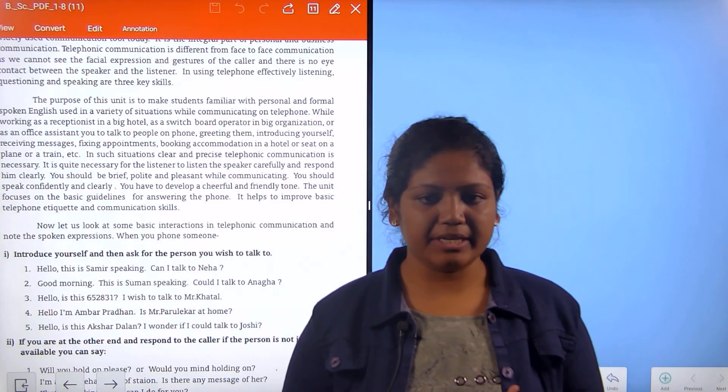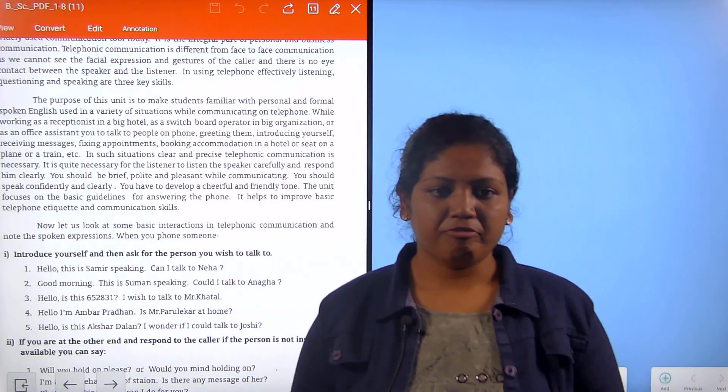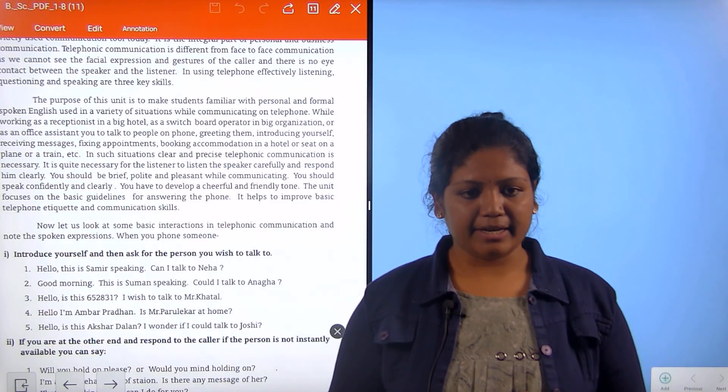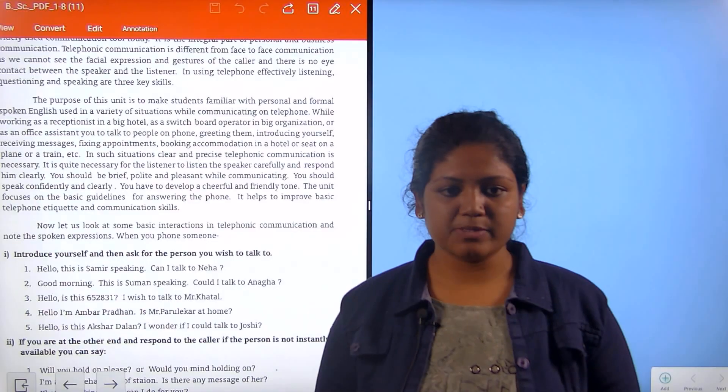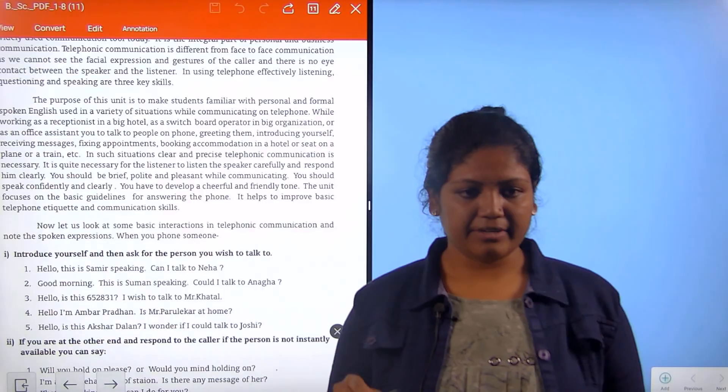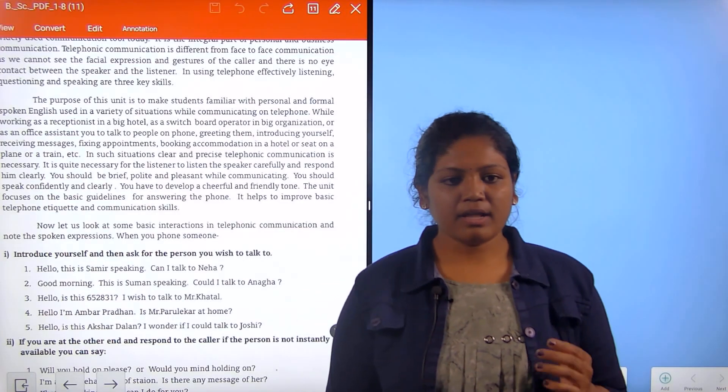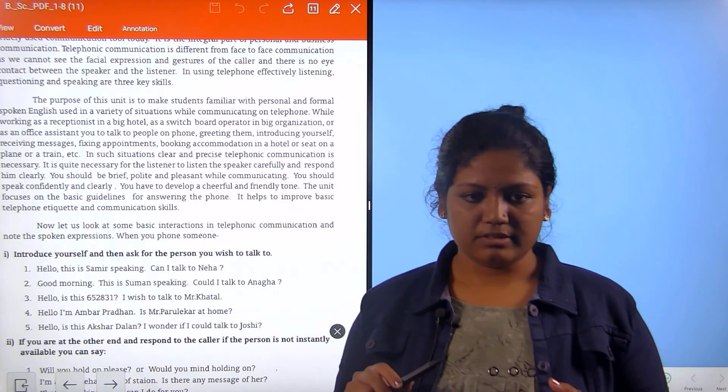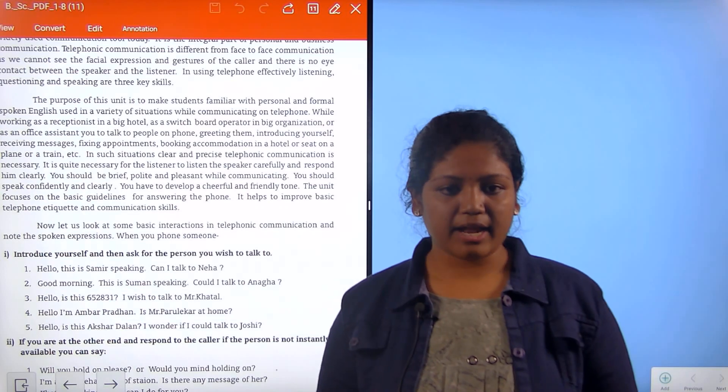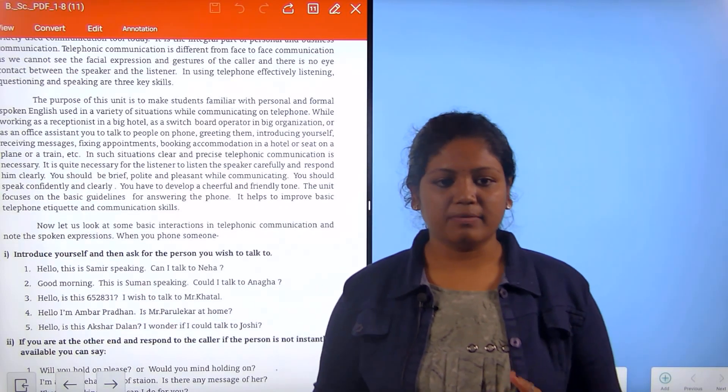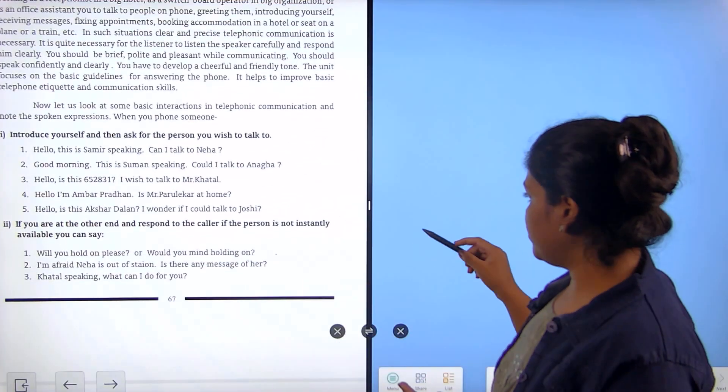Now let's look at some basic instructions in telephonic communication and note the spoken expressions when you phone someone. First, introduce yourself and then ask for the person you wish to talk to. First, hello, this is Samir speaking, can I talk to Neha? Then second one is, good morning, this is Sumal speaking, can I talk to Anagha? Third one, hello, this is 6528317, I wish to talk to Mr. Khatar. Hello, I am Ambar Pradhan, is Mr. Parurekar at home? And lastly, hello, is the Akshar Dalan, I wonder if I could talk to Joshi.